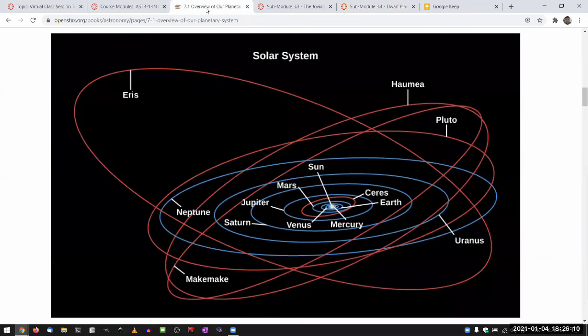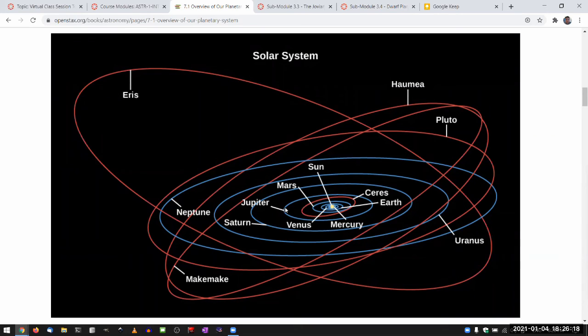But what we do know through that 2006 redefinition of planet is that we have the eight major planets, and the future trans-Neptunian objects to be discovered that meet the criteria will be dwarf planets.